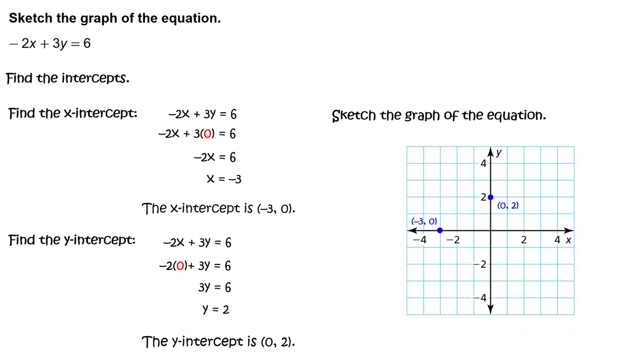Plot the intercepts negative 3, 0 and 0, 2. To sketch the graph of the equation negative 2x plus 3y equals 6, draw a line through the plotted points.